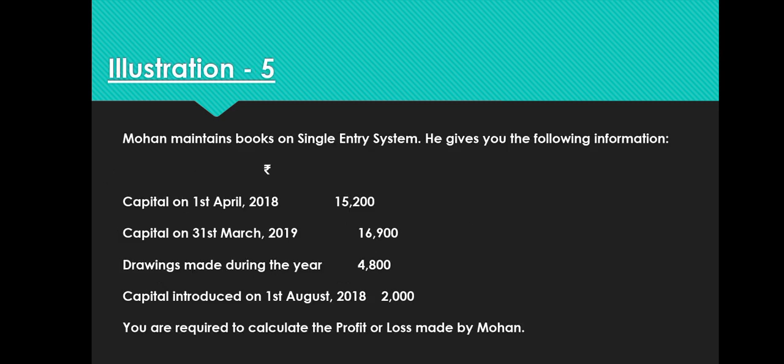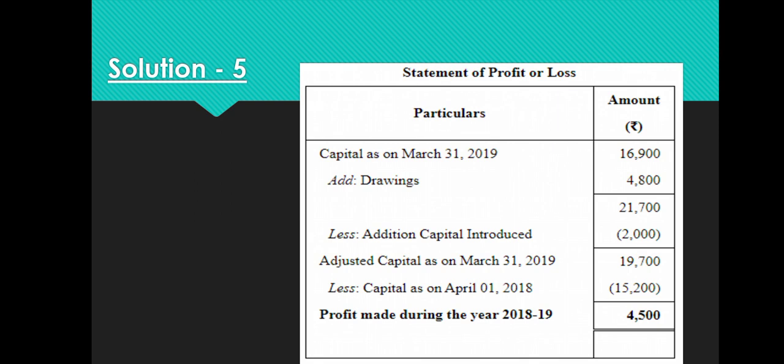Illustration 5: Mohan — capital on 1st April Rs. 15,200; capital on 31st March Rs. 16,900; drawings Rs. 4,800; capital introduced Rs. 2,000. Statement of Profit and Loss: Closing capital 16,900 + drawings 4,800 − additional capital 2,000 = adjusted capital 19,700 − opening capital 15,200 = profit Rs. 4,500.